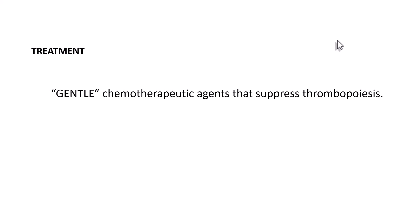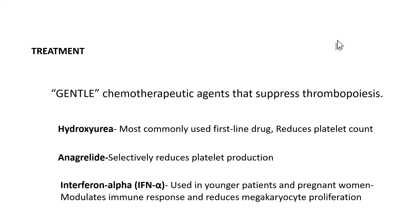Treatment of essential thrombocytemia is most often with gentle chemotherapeutic agents that aim to suppress thrombopoiesis and reduce platelet production. Hydroxyurea is the most commonly used first-line drug. Anagrelide can be used as it selectively reduces platelet production. In pregnant women and younger people, interferon alpha is used because it modulates the immune response and also reduces megakaryocyte proliferation.